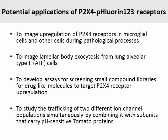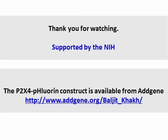To summarize: our data show that P2X4 fluorine-123 is a powerful and precise way to study P2X4 trafficking with light. In future work, P2X4 fluorine-123 could potentially be used to image upregulation of P2X4 receptors in microglial cells during pathological processes, to image lamellar-body exocytosis from lung alveolar type 2 cells, to develop assays for screening small compound libraries for drug-like molecules targeting P2X4 receptor upregulation, and to study the trafficking of two different ion channel populations simultaneously by combining it with subunits carrying pH-sensitive tomato proteins. Our work was supported by the NIH and our constructs are available. Thank you for listening.